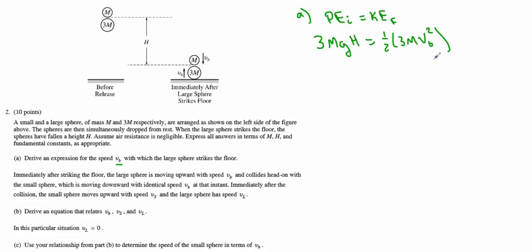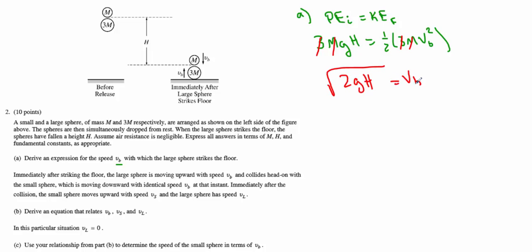Rearranging for V: the M's cancel each other out, and the 3's cancel out. Multiplying by 2 and taking the square root gives us VB equals the square root of 2GH. This part was worth 2 points, and it is in terms of all our variables as needed.